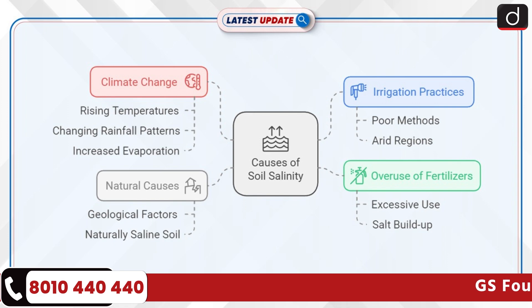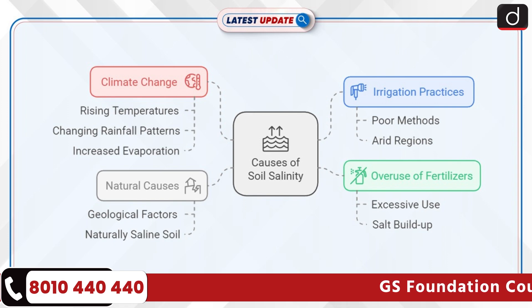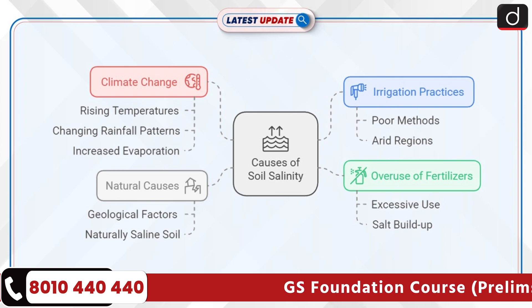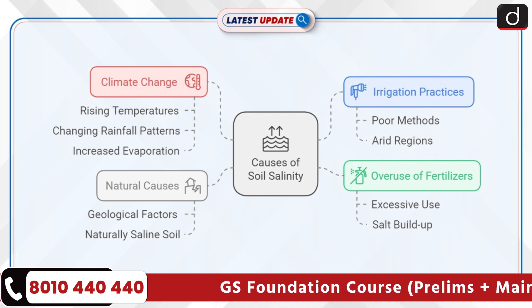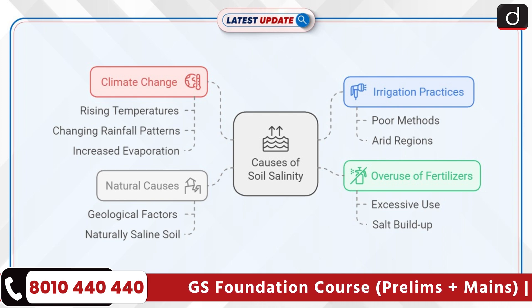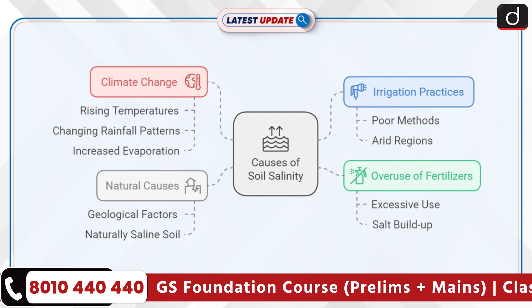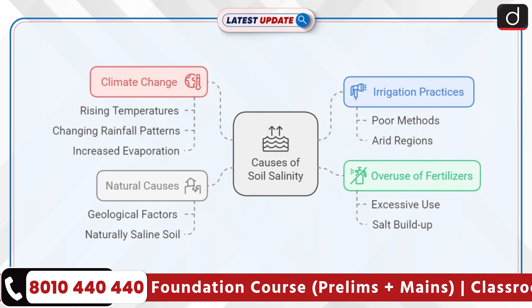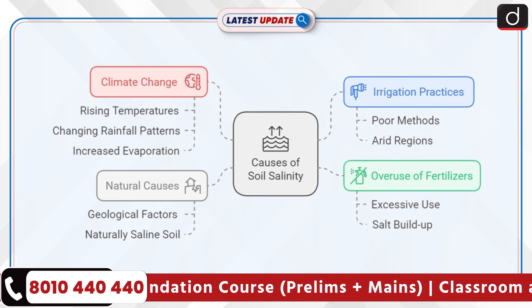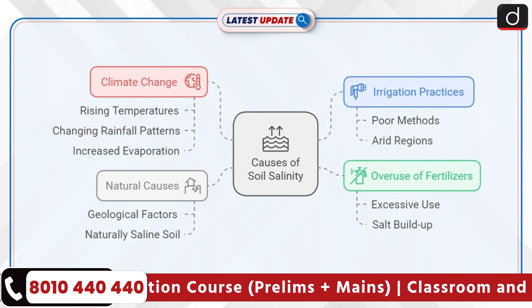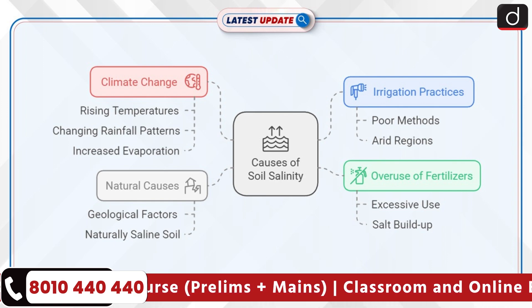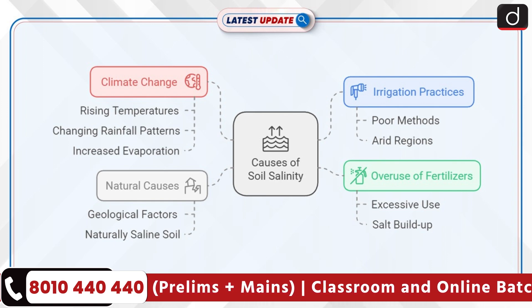Irrigation practices: poor irrigation methods lead to salt accumulation in the soil, particularly in arid and semi-arid regions. Climate change: rising global temperatures and changing rainfall patterns can increase the evaporation rate, causing salts to build up in the soil.